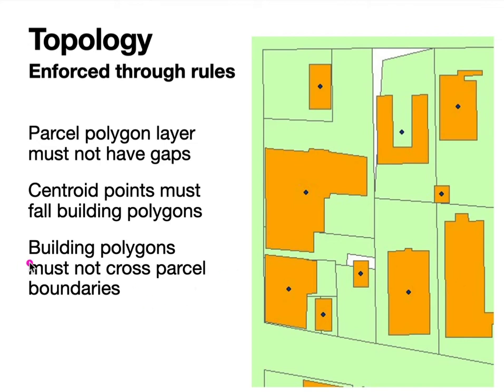There's also a topological rule that building polygons must not cross parcel polygons, and we see that error occurring in several locations where buildings overlap parcel boundaries. Most topology rule systems allow you to put exceptions in — for example, if someone owns a double-sized lot made of two lots combined and has built a building across both parcels, that's a known condition you can mark as an exception.